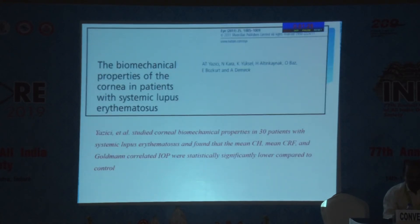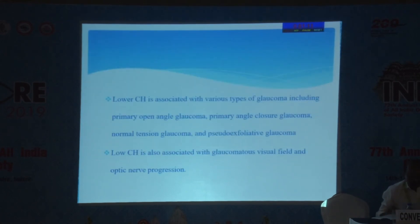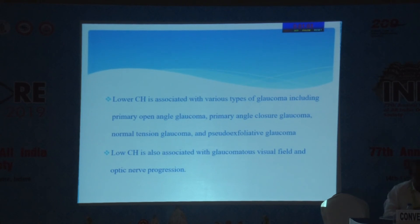In a similar study, Yazisi et al. studied corneal biomechanical properties in 30 patients with SLE and found that mean CH, mean CRF, and Goldman correlated IOP were statistically significantly lower compared to the control group. Lower CH is associated with various types of glaucoma including POAG, PACG, normal tension, and pseudo-exfoliative glaucoma, as well as visual field and optic nerve progression.